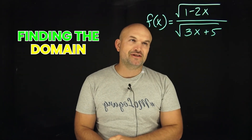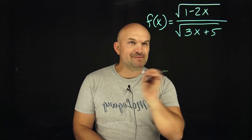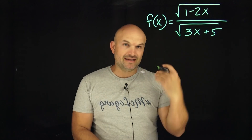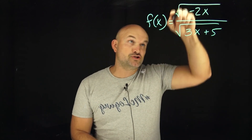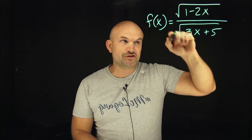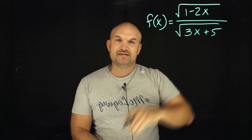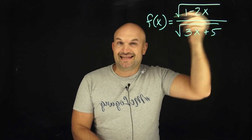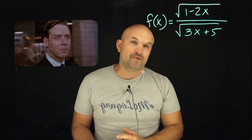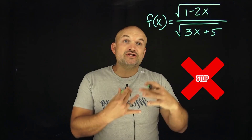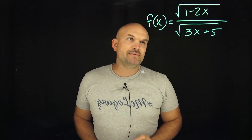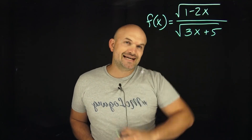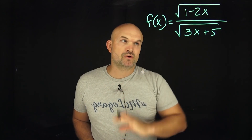We need to find the domain of a function that looks like this. There's a simple little trick that I want you to be able to follow. In this case we have a lot going on. We have the square root of 1 minus 2x, we have the square root of 3x plus 5, and we have a rational function with a numerator and denominator. There's a lot of restrictions on the domain. However, this simple trick is going to allow us to identify this domain without doing so much work.